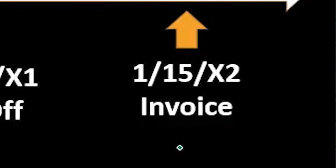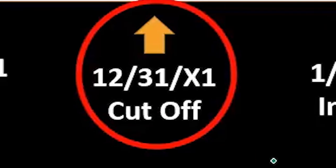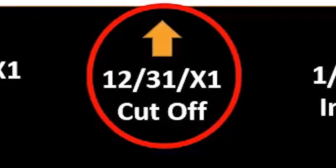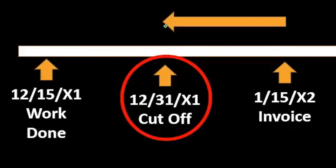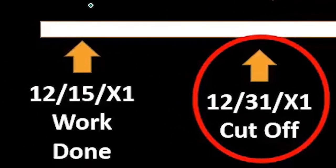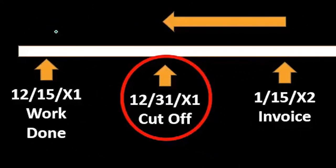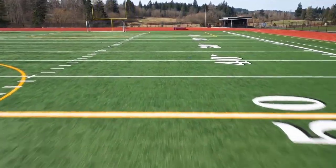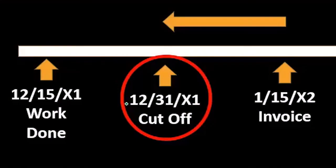Therefore, the adjusting journal entry would bring this back to the date of the financial statements. Note it does not take it back to the exact point in time the revenue was earned — we don't need to do that to make the financial statements right. If we pull it back to the date of the financial statements, we are correct as of 12/31. That's the goal of the adjusting process, and the reason all journal entries will be made as of 12/31.